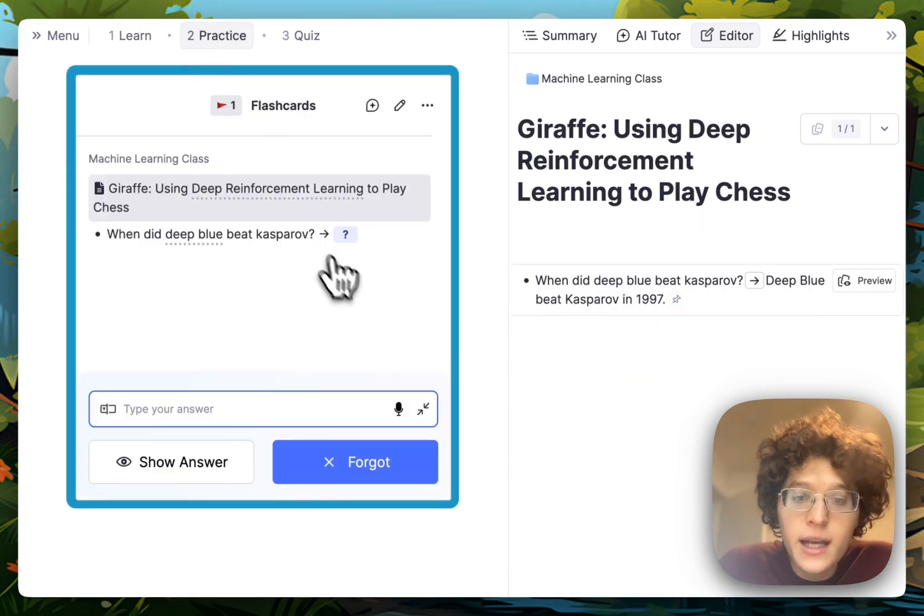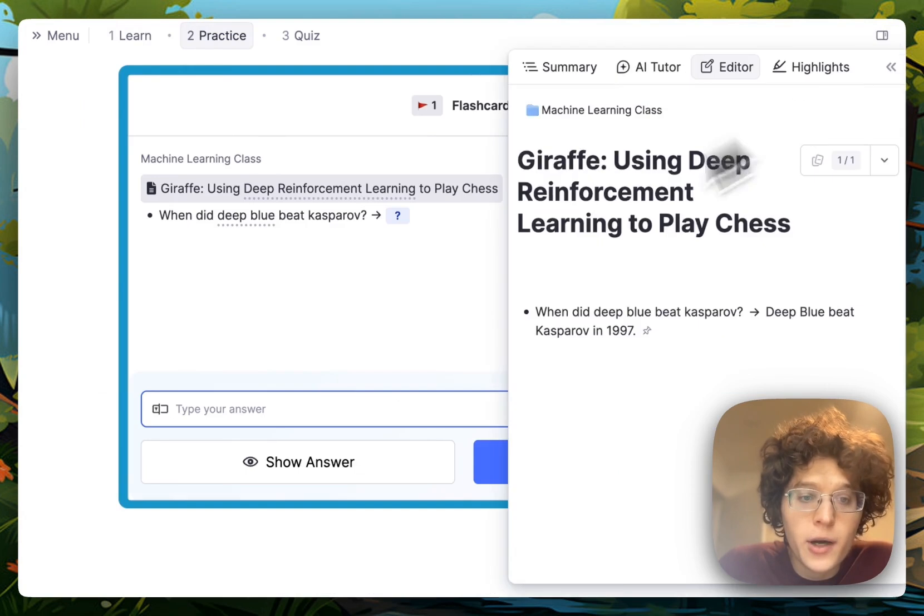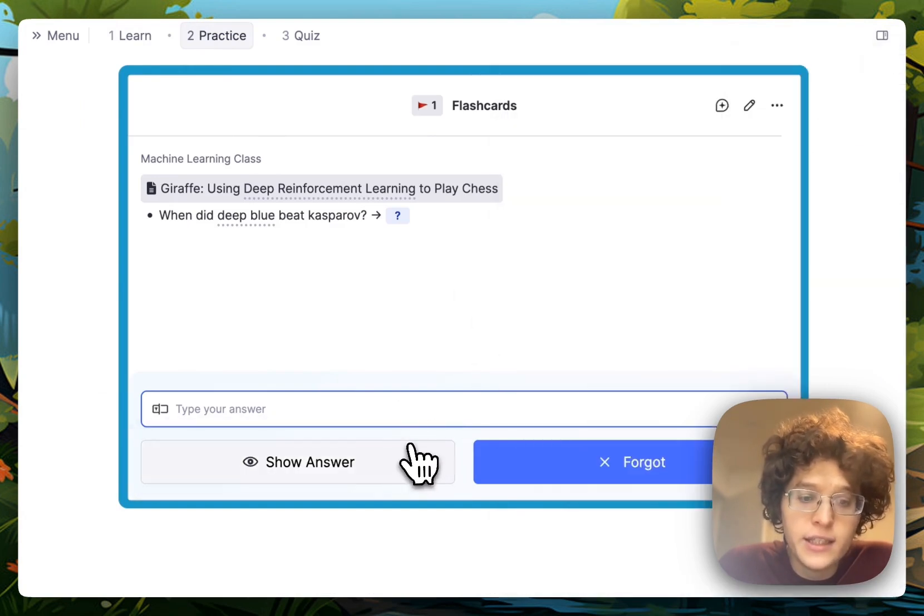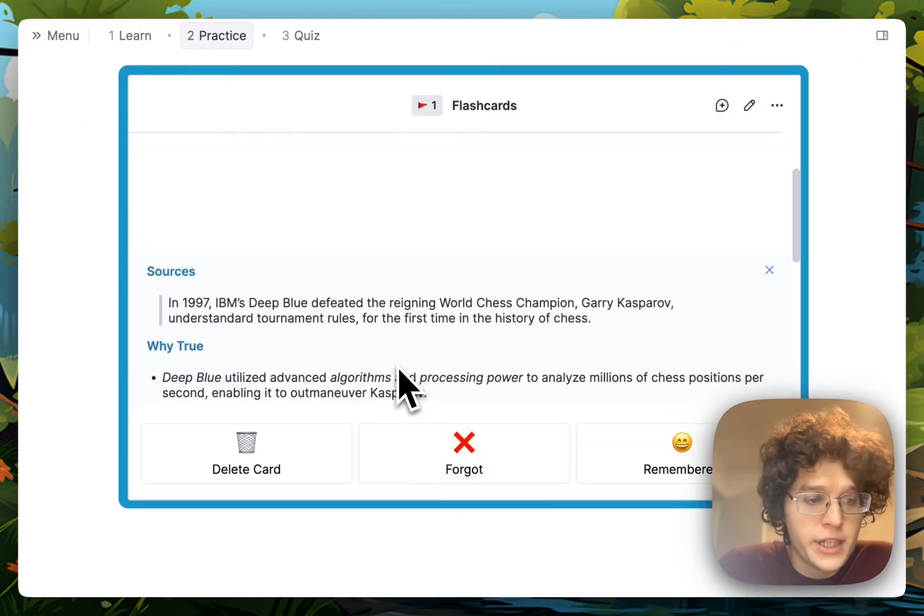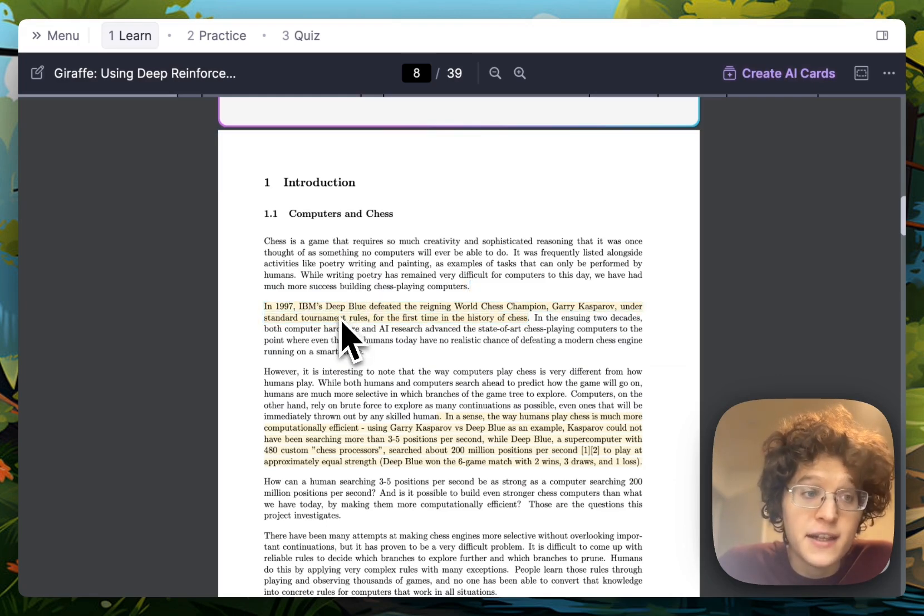When practicing, these citations will show up on the back of your card in the key insights section. If I scroll down, you can see it directly here, and if I click on it, it'll bring me back to that corresponding place in the PDF.